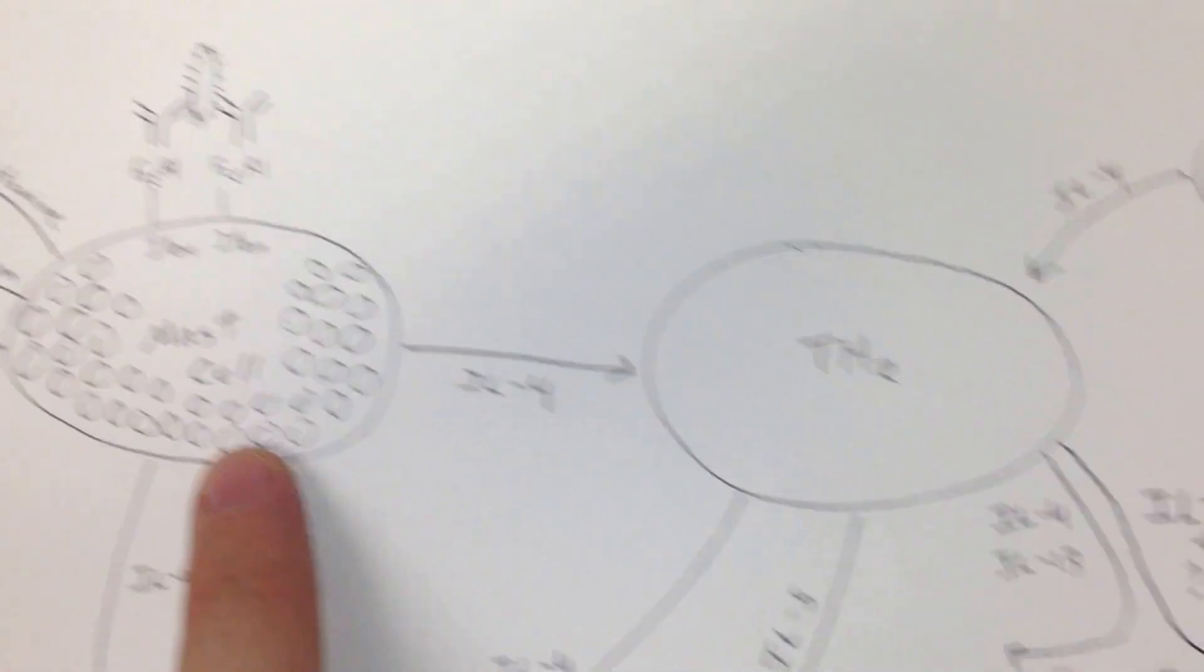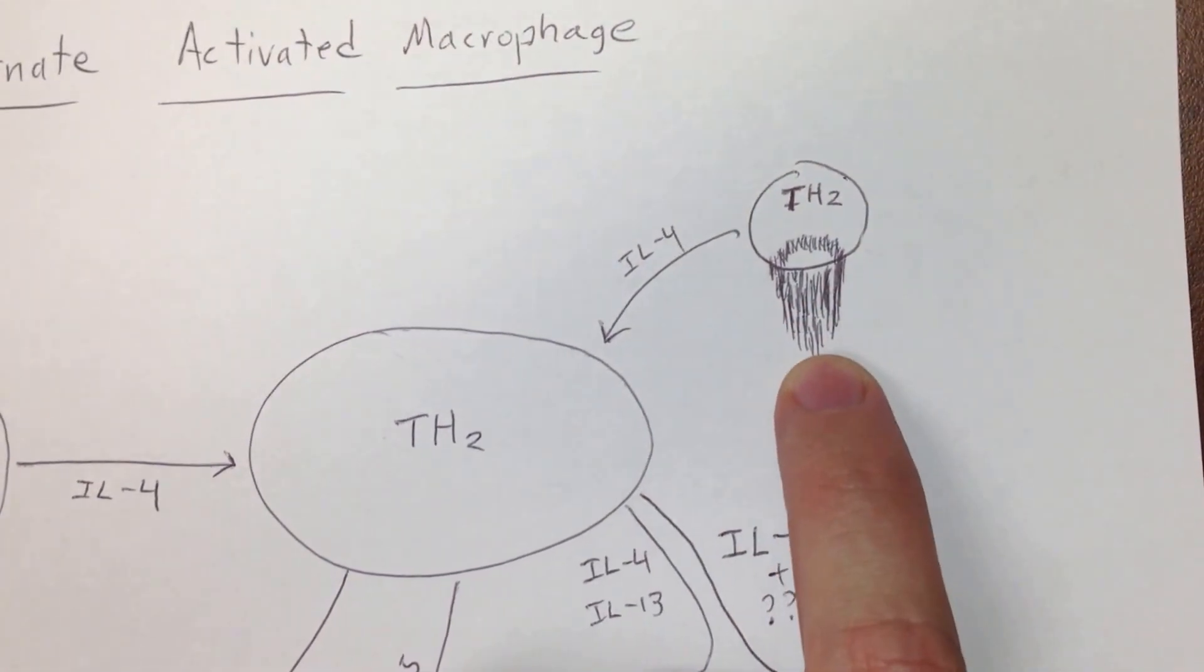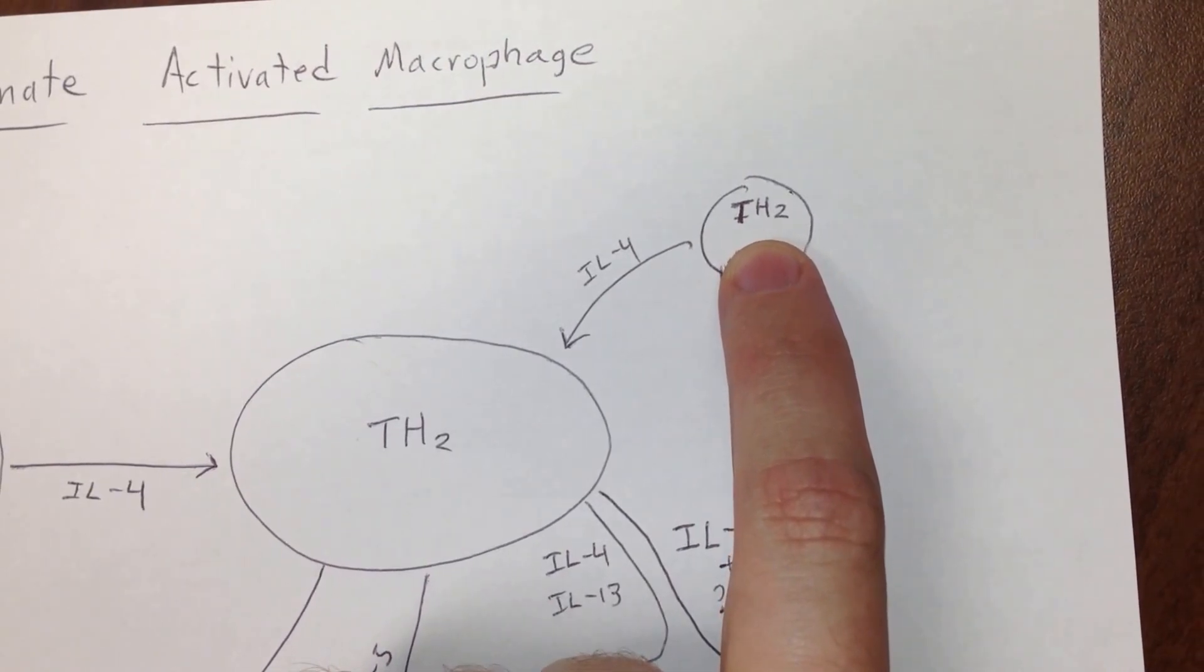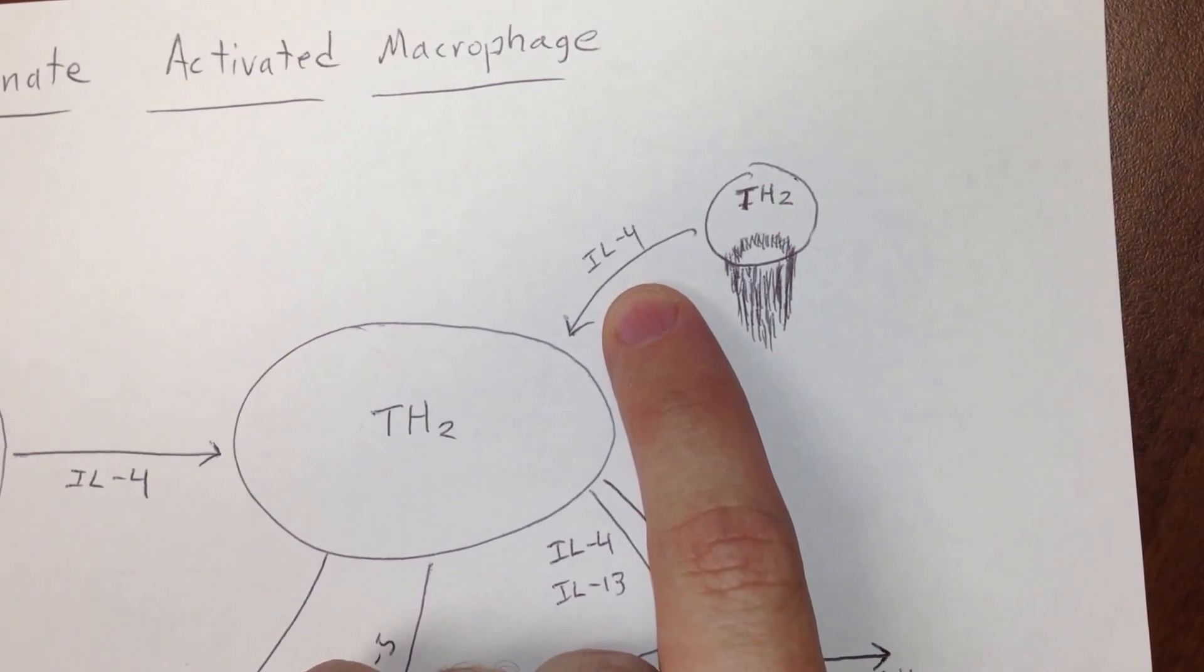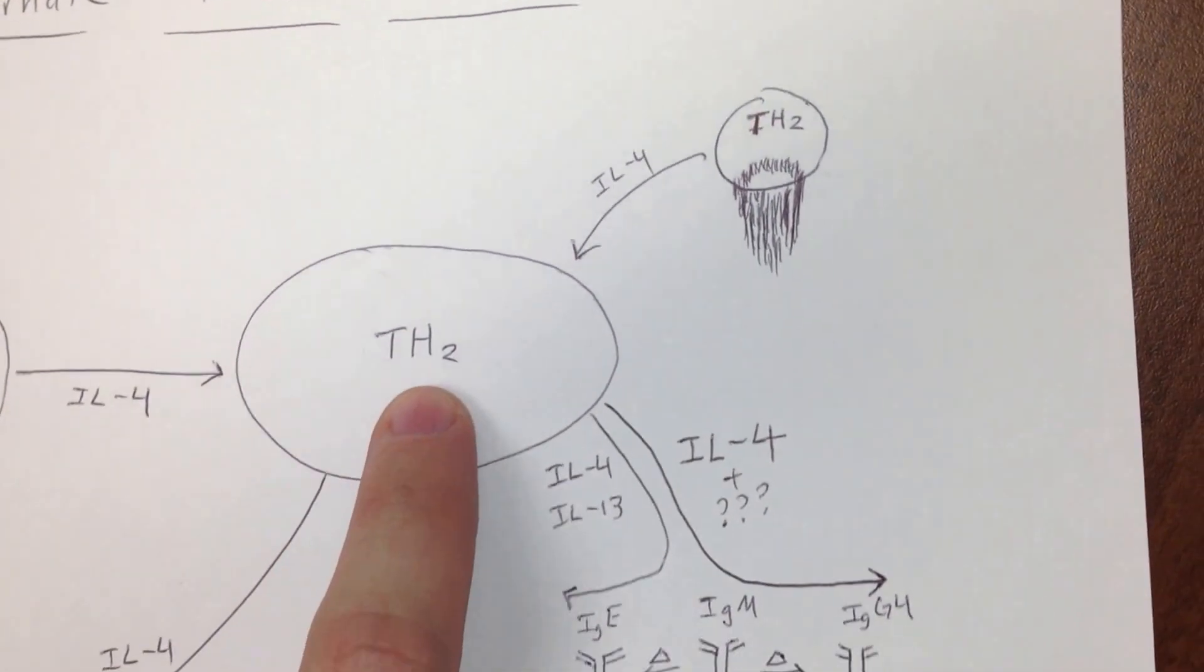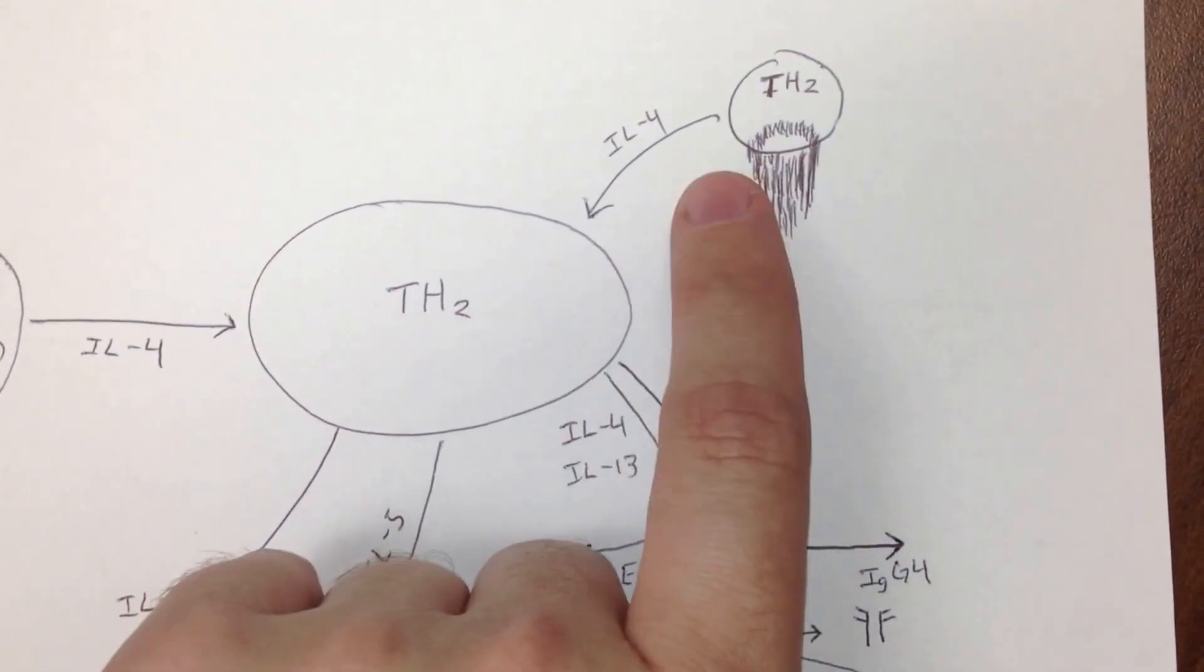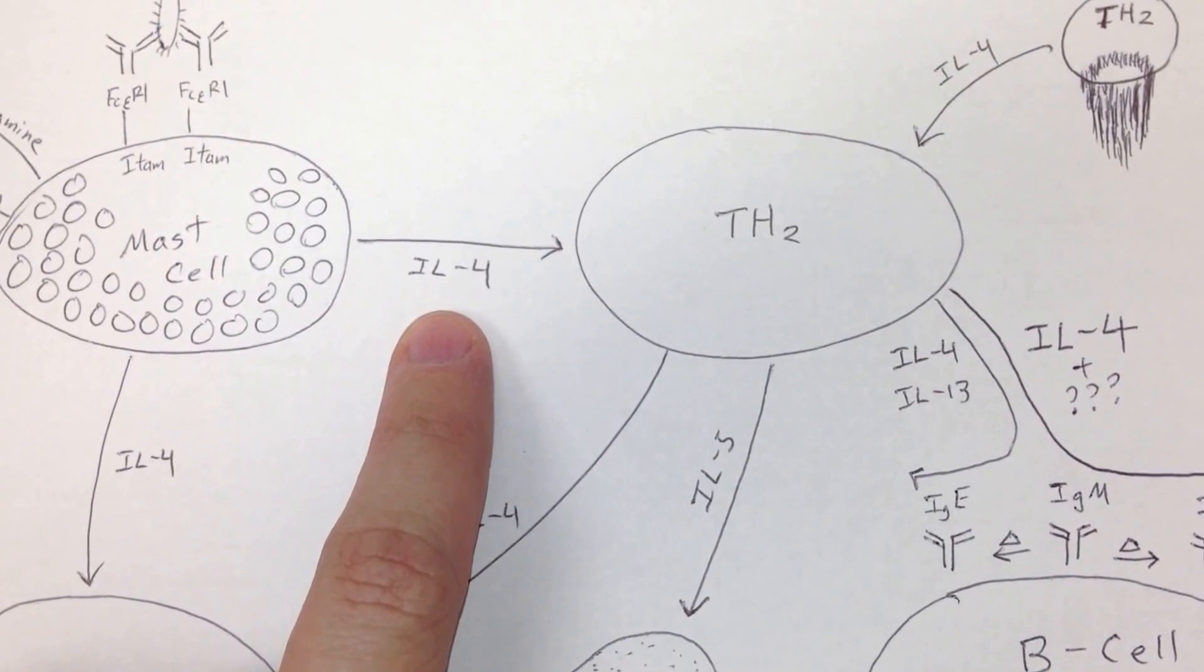You can also say, well, what if there's no mast cell? How else are we going to get a T type 2? Well, older TH2 cells, like this one with a beard here—this guy was activated maybe a long time ago—this T helper 2 cell also secretes interleukin 4, and that can tell this one, hey, why don't you be a T helper 2 cell just like me. So we've got IL-4 coming off here.